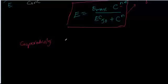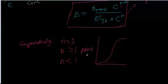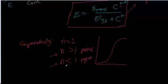When N equals 1 we get the standard equation. When N is greater than 1 that represents positive cooperativity, meaning more binding takes place at low concentration. When N is less than 1 that is negative cooperativity, meaning less binding takes place at low concentration.